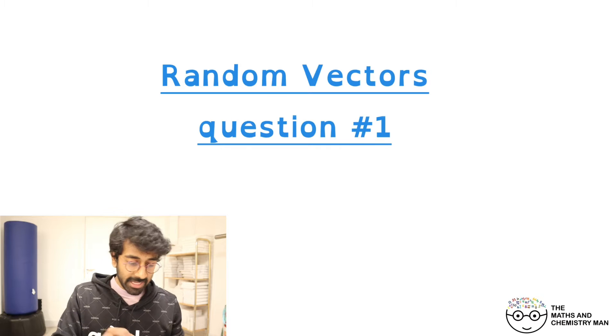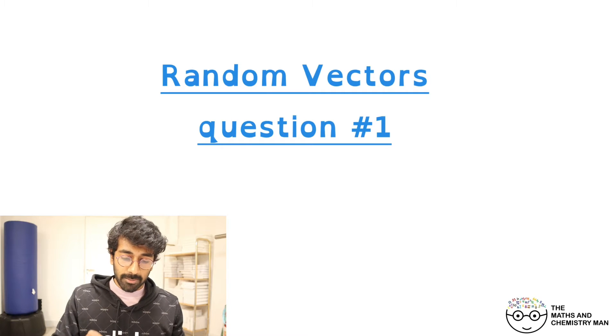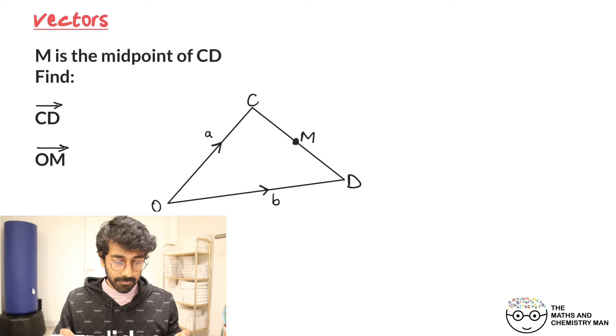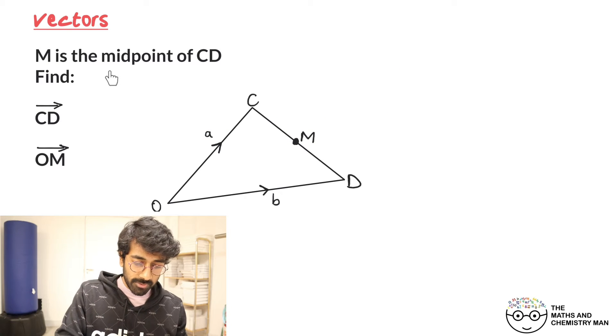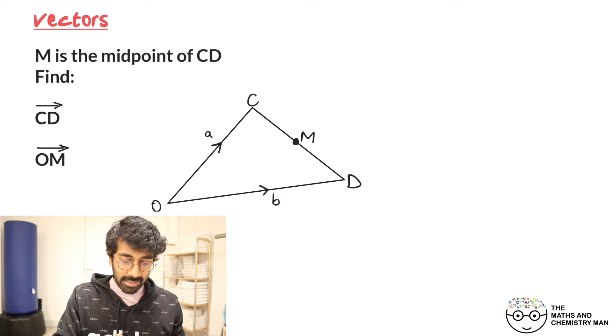Okay, it's GCSE time. We've got a random question here just for you to practice on some vectors. Here it is, have a quick read and see how we get on. We've got M is the midpoint of CD, there we go, M is bang in the middle.